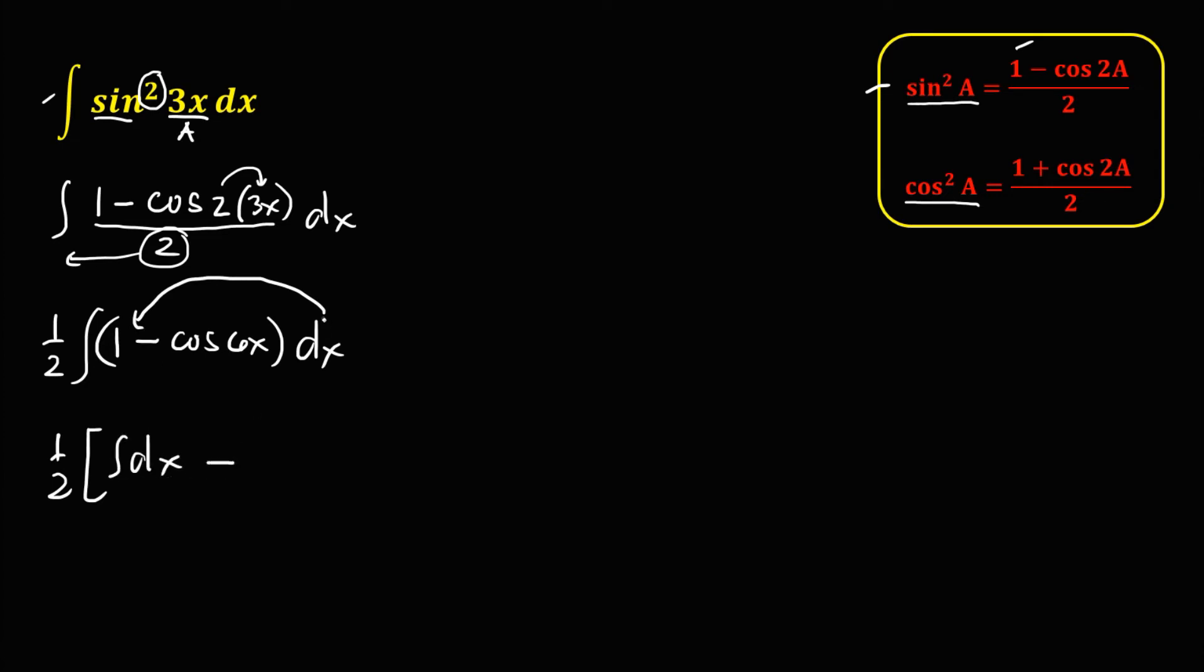Then to find the integral of 1 half times, since the integral of dx, that's x minus the integral of cosine. So the integral of cosine, that's positive sine.